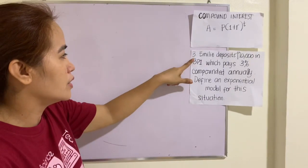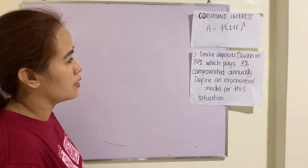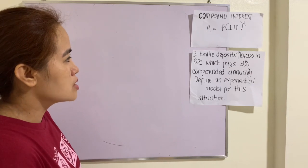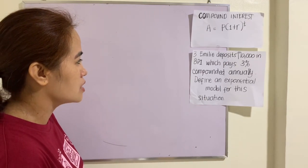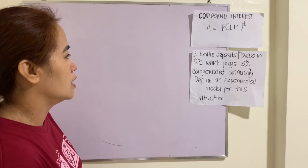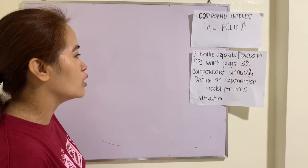So here in this problem, it says here, Emily deposits 10,000 in BPI, which pays 3% compounded annually.